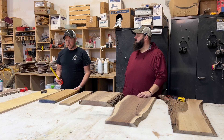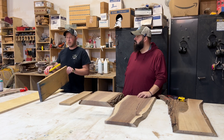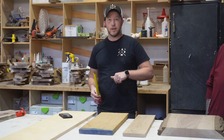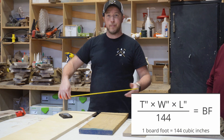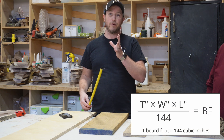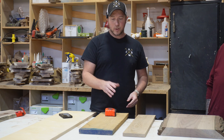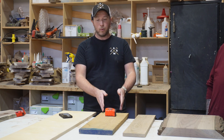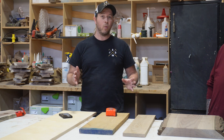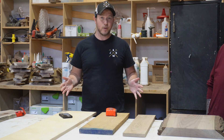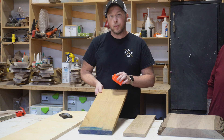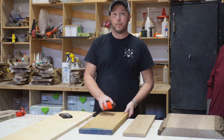Most lumber yards that sell rough lumber are going to sell it to you by the board foot. So if you're buying live edge or dimensional and you have an eight foot piece by two foot by two inches, you would multiply those three dimensions divided by 144. Most lumber companies that sell raw or rough cut wood will say their walnut is $15 a board foot, so you multiply the total board footage of that piece by 15 and that gives you the price.